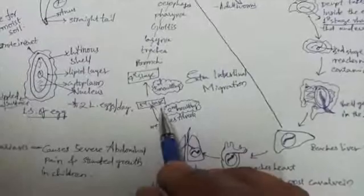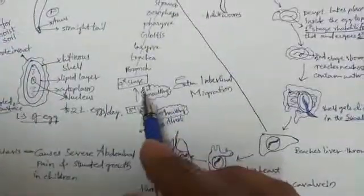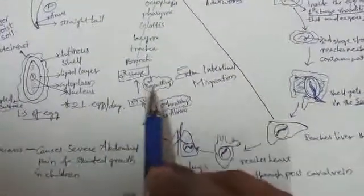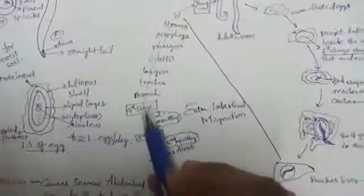It reaches the alveoli where second molting takes place. Third stage rhabditiform larva is produced, then fourth stage rhabditiform larva is produced.